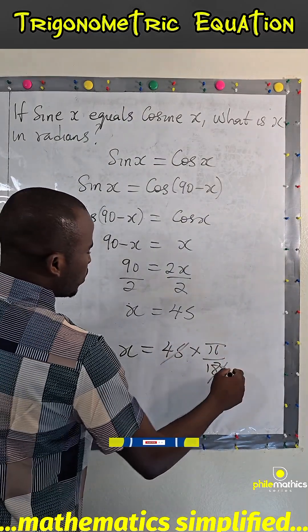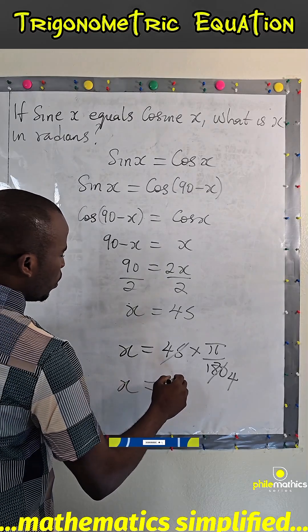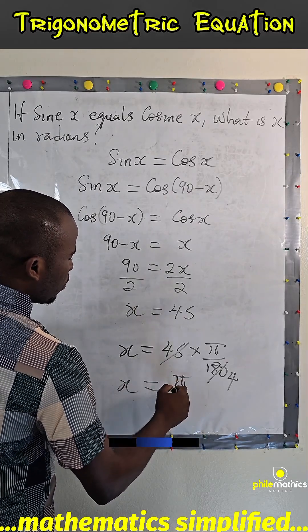45 can go into 180 four times. So x will be pi over 4.